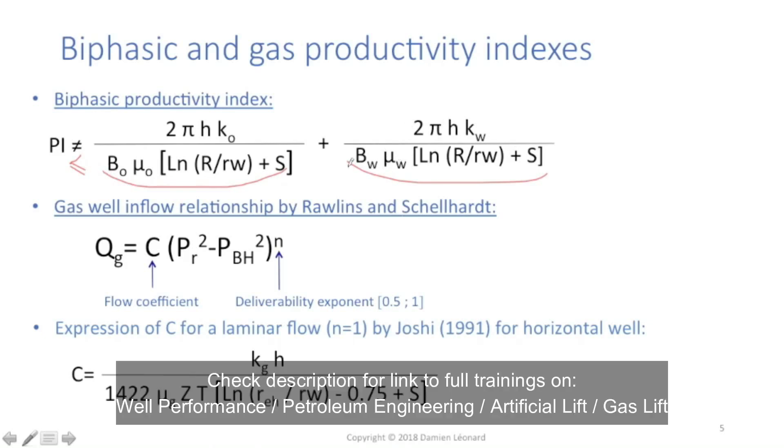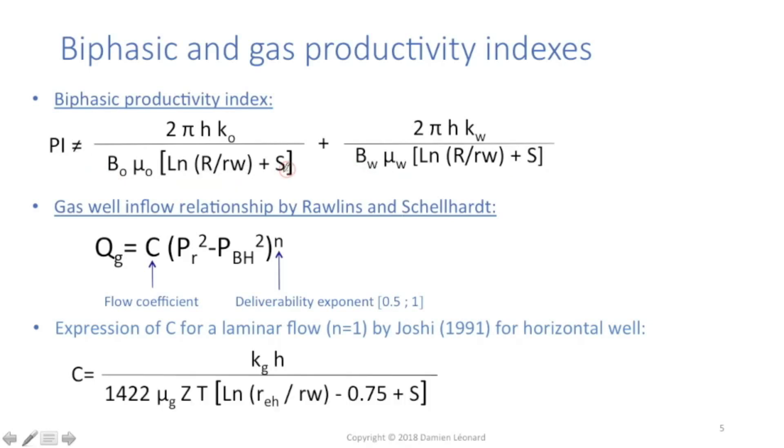So the sum of those two terms is going to be higher than the productivity index of that well. What you could do is you could choose one skin over there for the oil and one skin over there for the water to fudge it and make this equal. At the end, it doesn't really matter. And what you should understand is when studying the behavior of a well that produces oil and water, while the productivity index formula is not equal to that one,